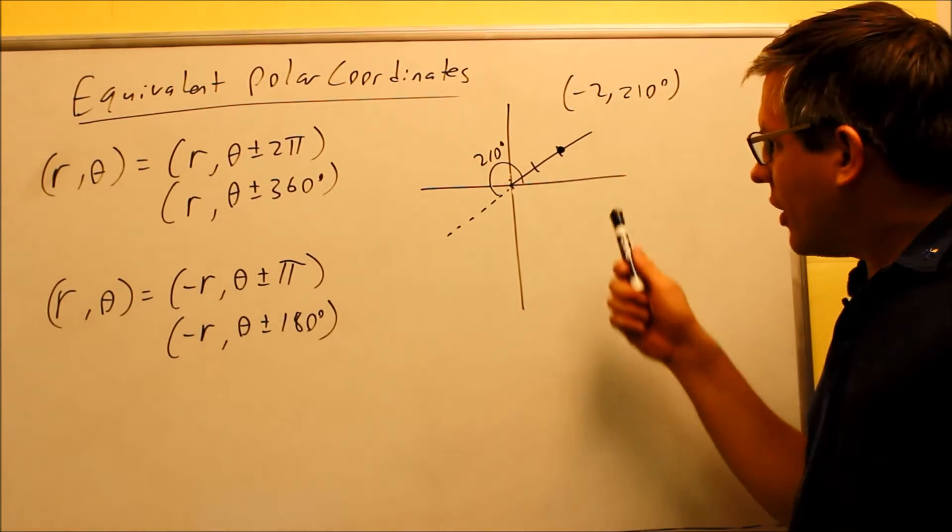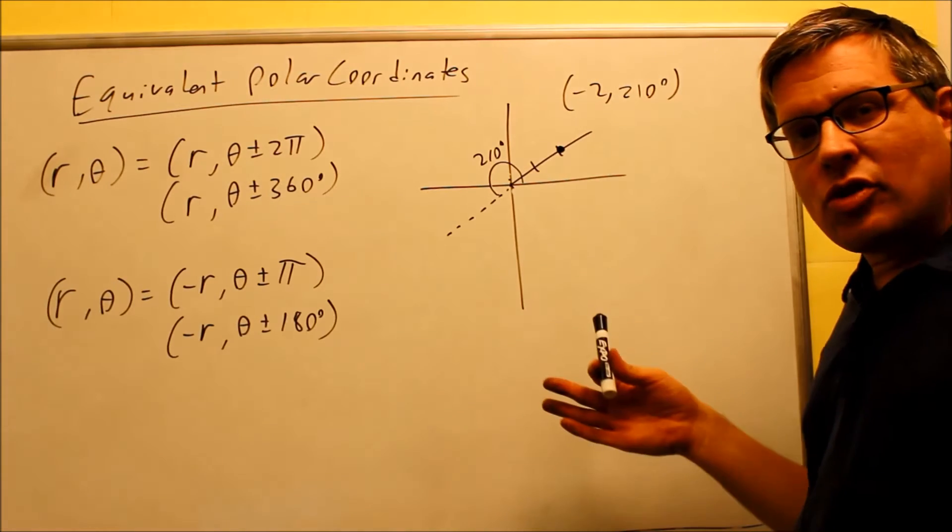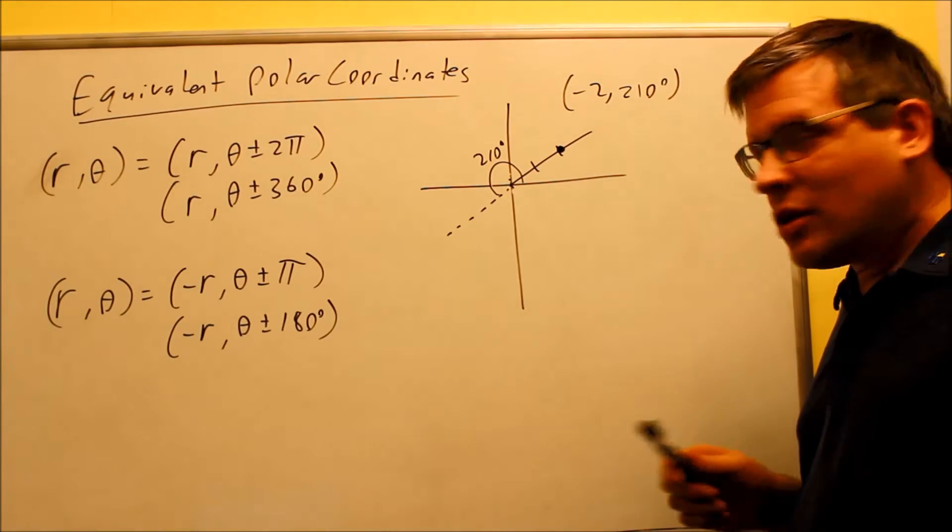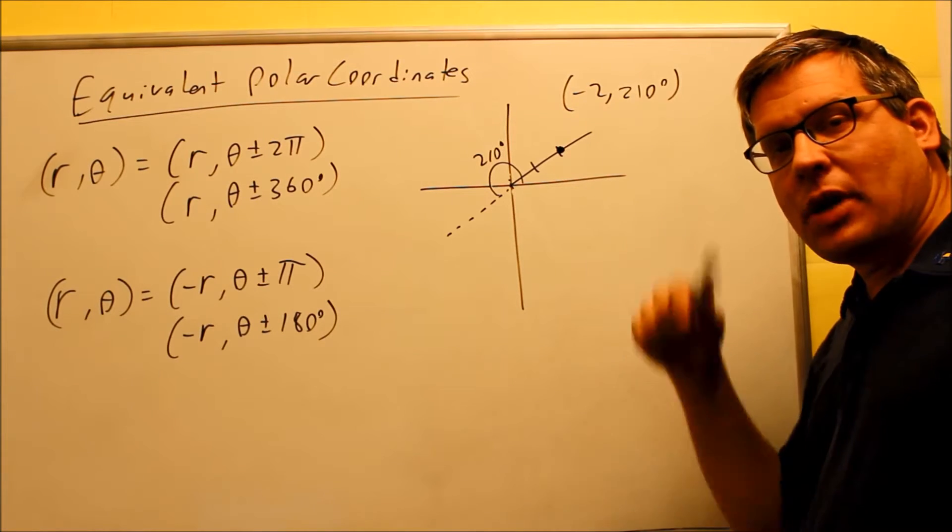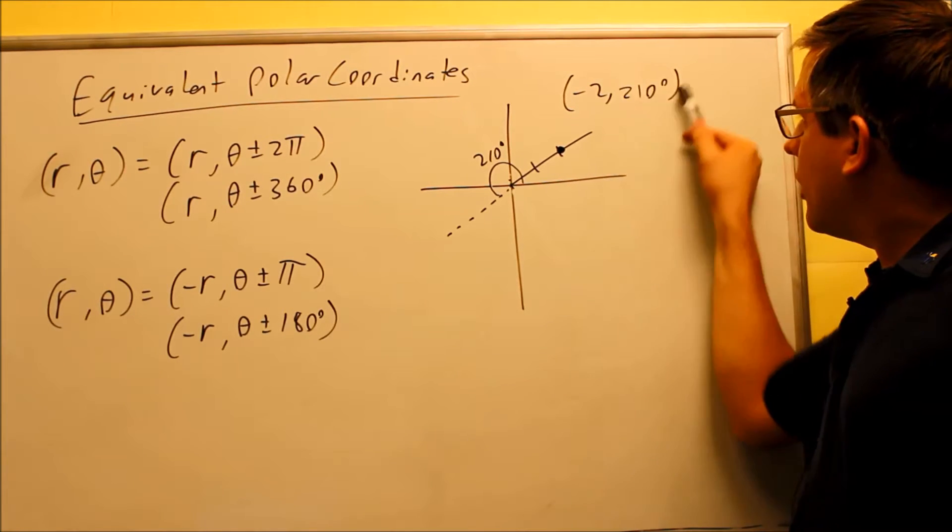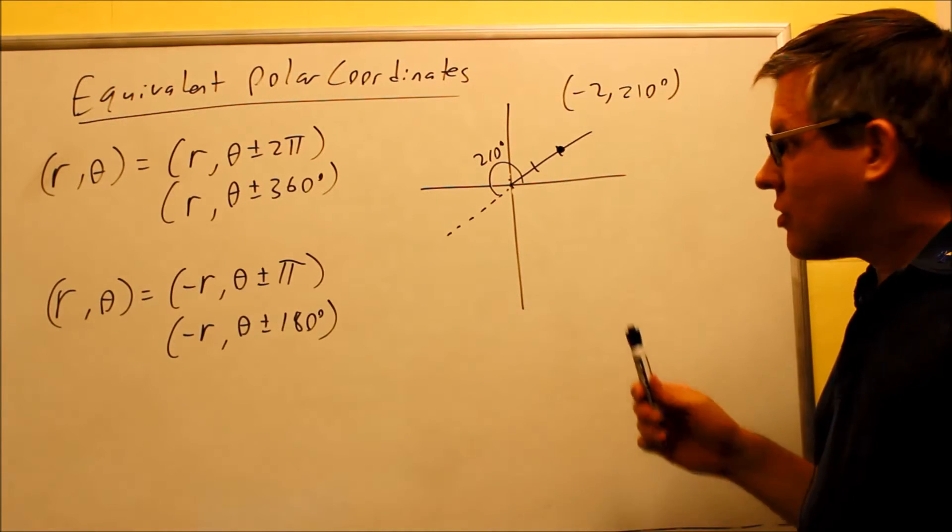So the question is, well instead of going through all that, that's a lot of work to go around here, reverse it, go back—is there an easier way that I can get an equivalent point that allows me to arrive at the same spot, but maybe instead of having a negative r I would have a positive r, or maybe there might be a way to simplify this angle? As it turns out, there actually is.